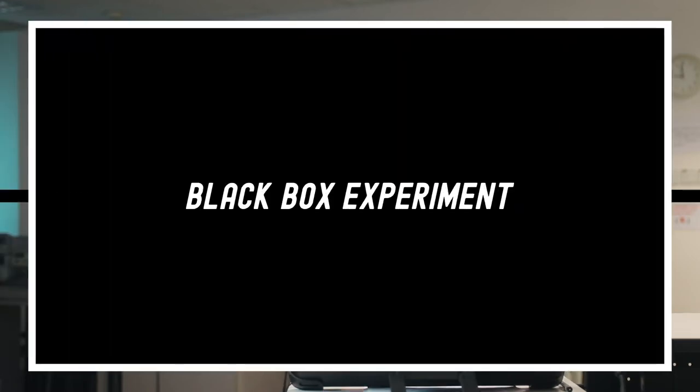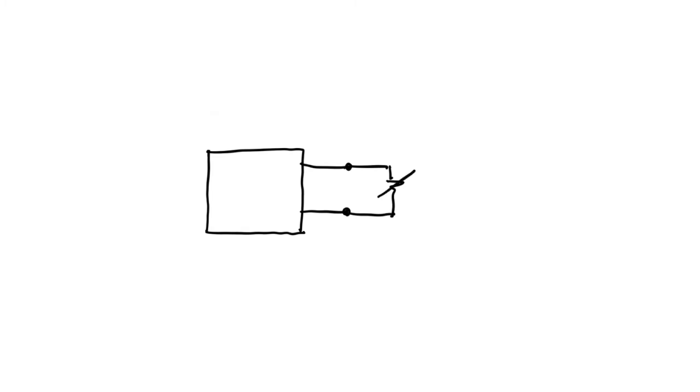Let's now talk about another experiment. The black box experiment can tell us if a circuit is linear or not. Imagine we have a circuit and we don't know anything about it, but we hide it inside a black box. One way to test whether it's linear or nonlinear would be to attach a variable resistor to it and start measuring the current and voltage that come out of the black box as I change the resistance. I'm assuming that the black box has some power source, because if there's no power source it will just give zero volts and zero amperes no matter what I do, and I wouldn't be able to extract any information.